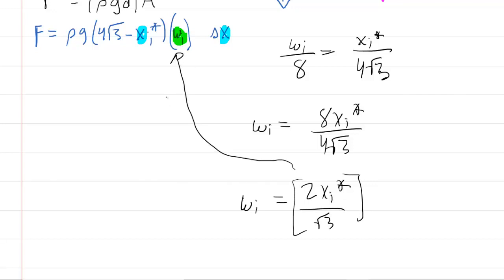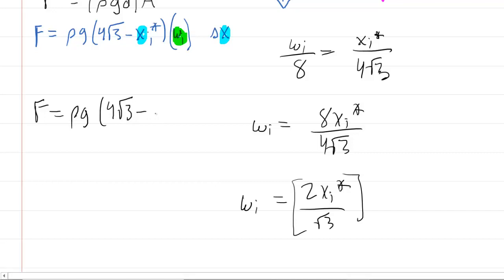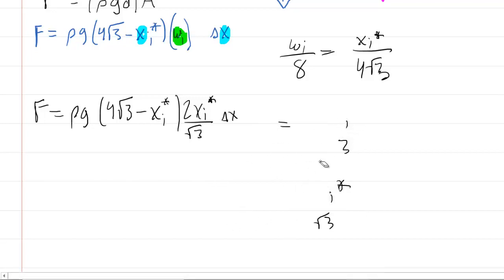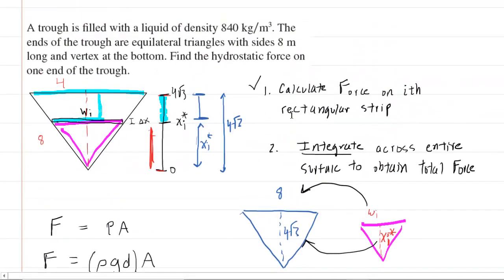And now we finally have completed phase one of the problem. We have the force acting on this thin rectangular strip. And it is all expressed in terms of a single variable x. And don't forget the little delta x there. So phase one is complete. We move on to phase two. Let's remind ourselves of what that was. Phase two was to integrate across the entire surface.